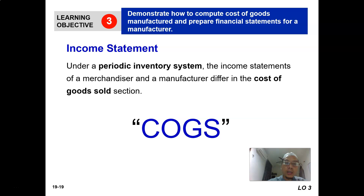We have looked at the costs associated with a manufacturing company. Whether they are a manufacturing company, merchandising, or service, when they produce financial reports, the first financial report will be the income statement. So how would the income statement of manufacturing differ from the other types of business? When comparing the income statement between manufacturing operation and merchandising operation, they differ in the section of cost of goods sold, but only under the periodic inventory system.